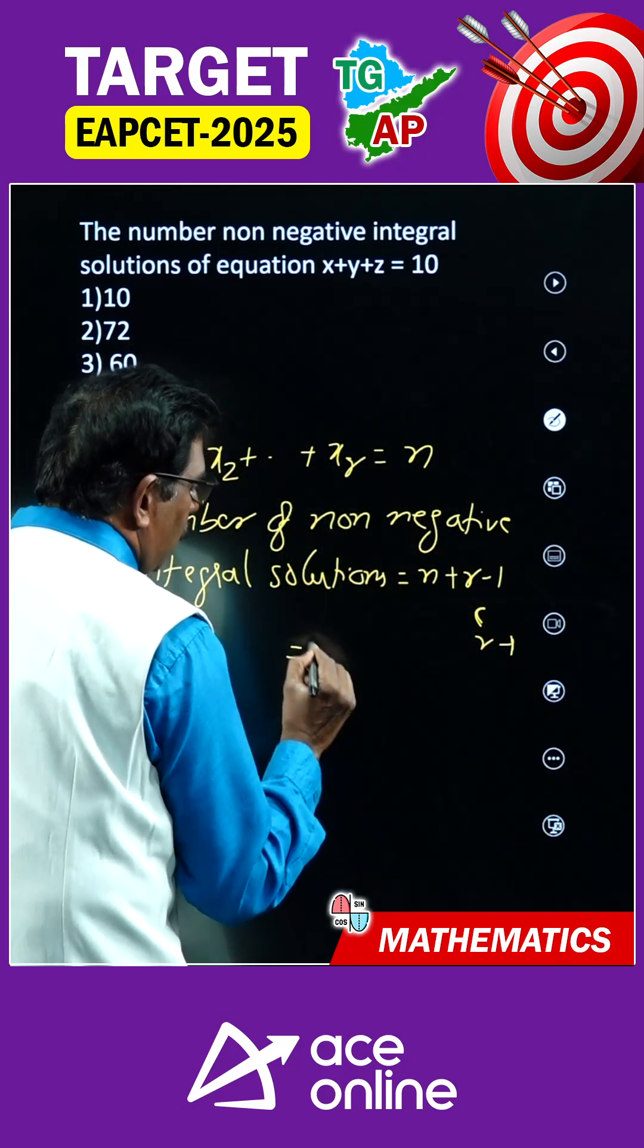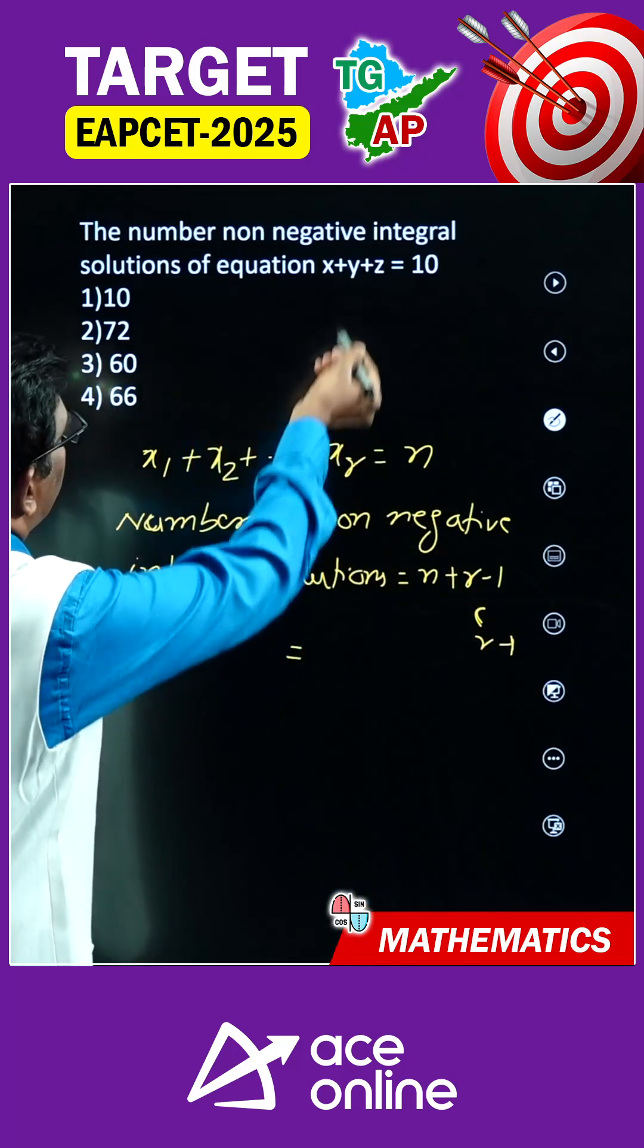Here you can apply the same formula. What is n here? In place of n, what is there? 10.